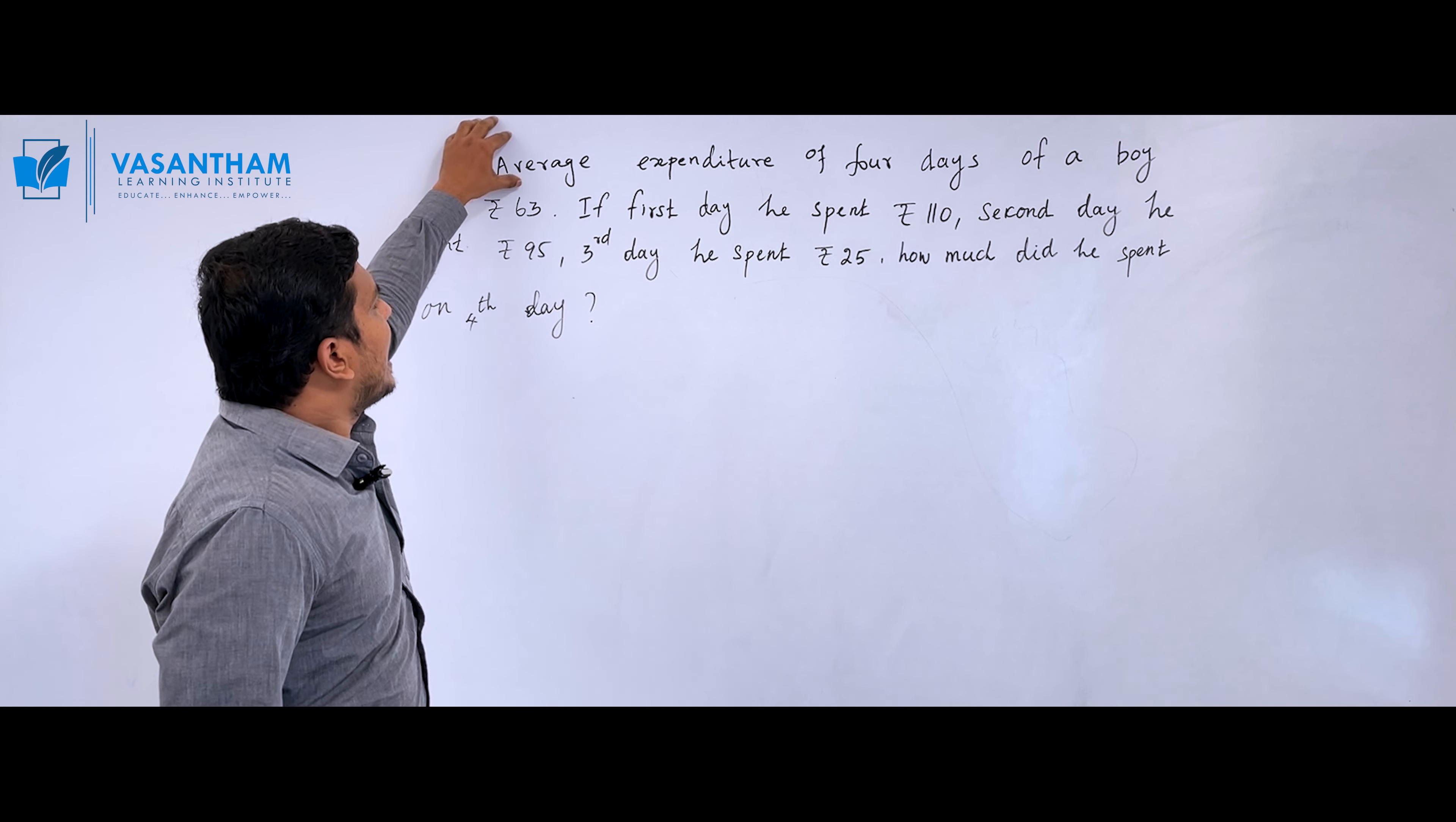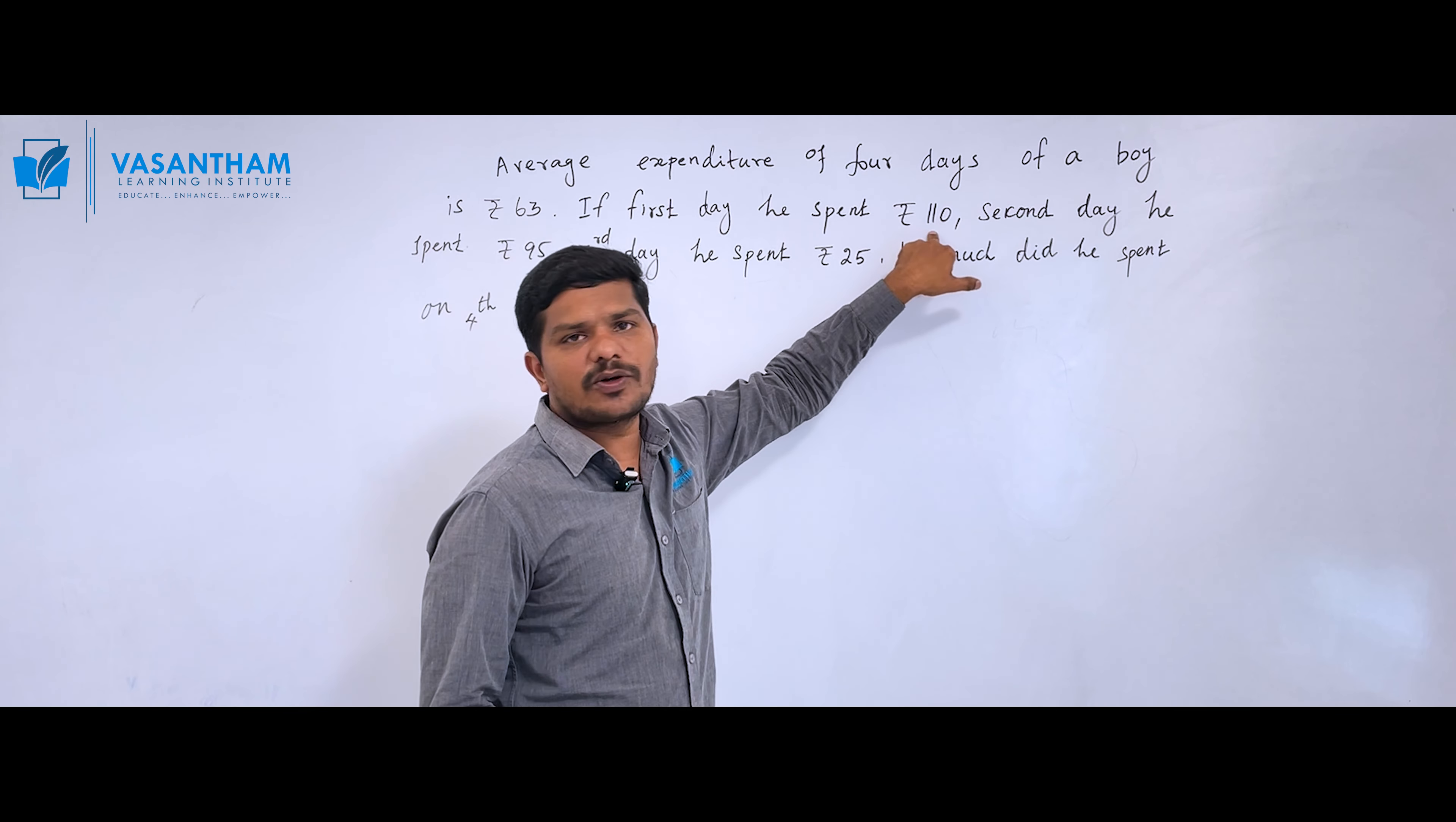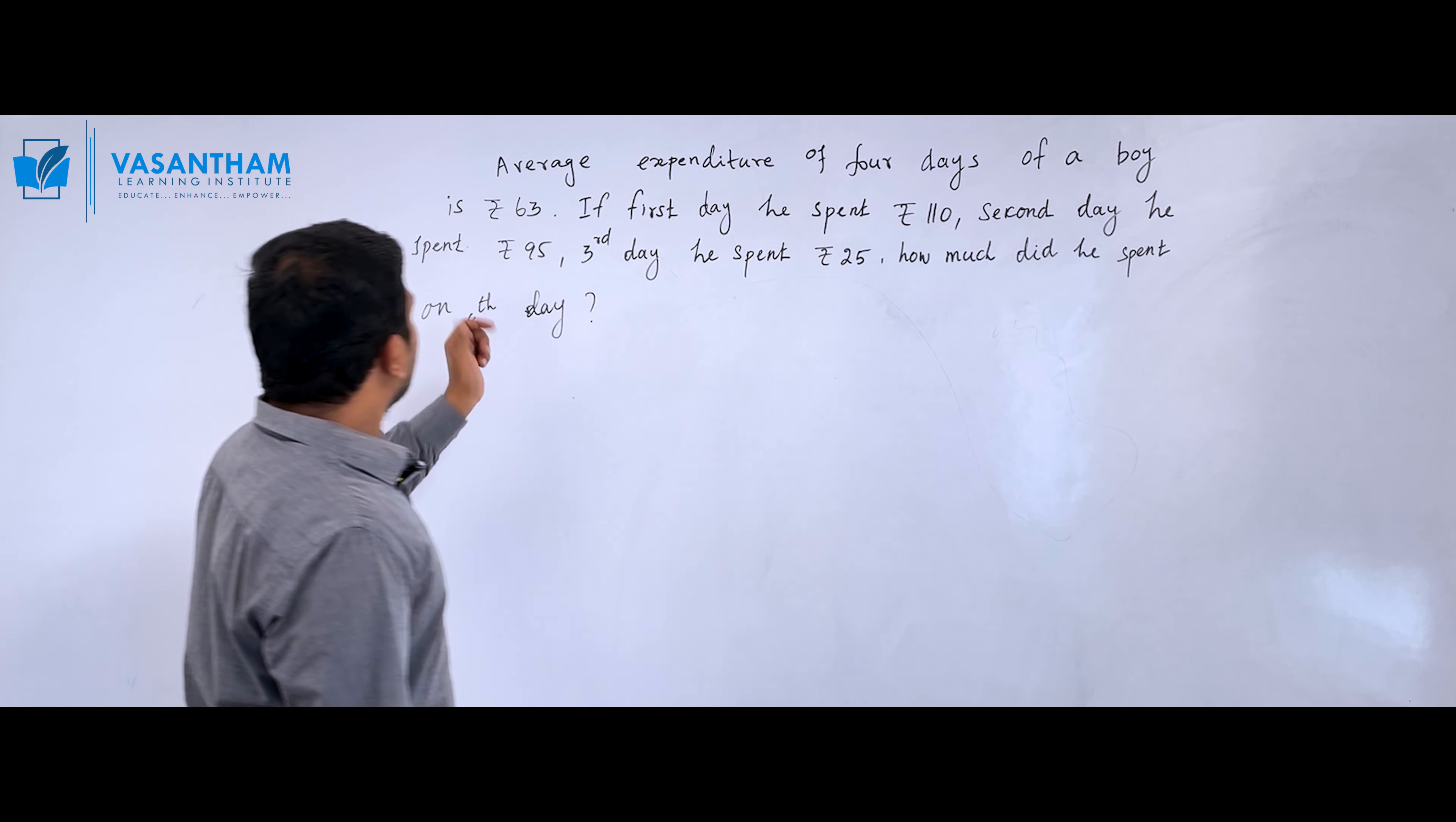What is the problem? The average expenditure of 4 days of a boy is 63 rupees. If the first day he spent 110 rupees, the second day he spent 95 rupees, and the third day he spent 25 rupees, how much did he spend on the fourth day?